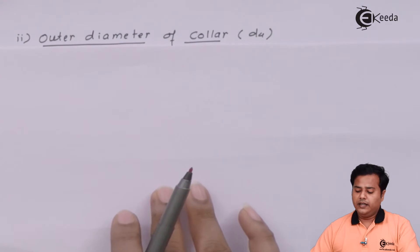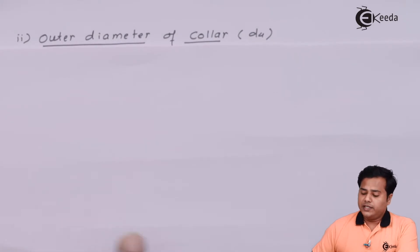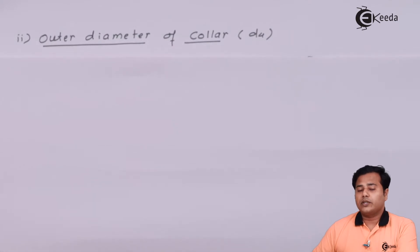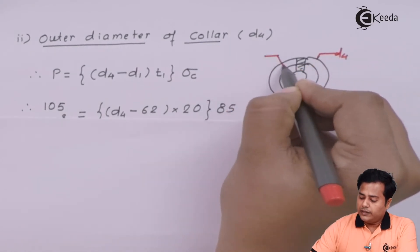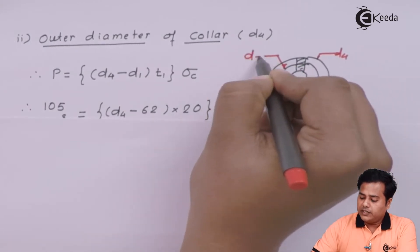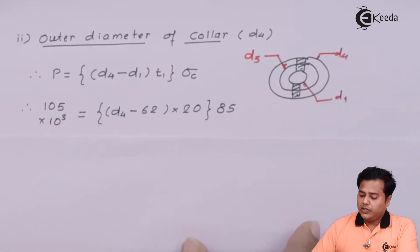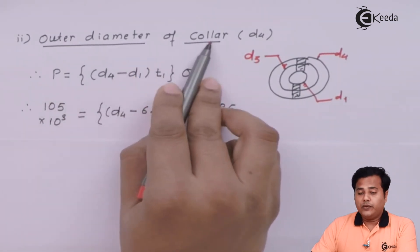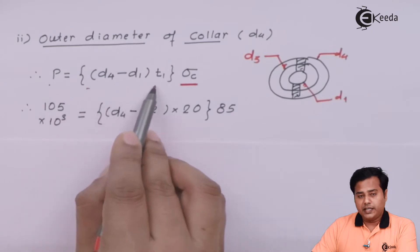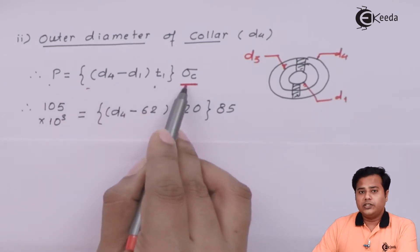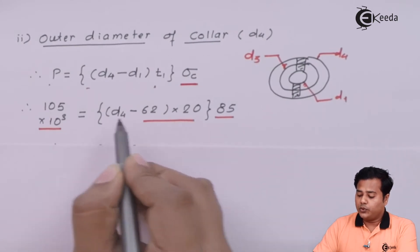Let us move ahead and find the outer diameter of the collar. Collars are provided to both the spigot as well as the socket. We consider the collar provided to the socket, and the outer diameter for this socket collar will be named D4. So D4 is the outer diameter of the socket collar, D3 is the socket outer diameter, and D1 is the innermost diameter. The collar always fails under crushing, so we apply the crushing criteria: axial load equals crushing strength into projected area experiencing crushing. The crushing strength value is already determined as 85.